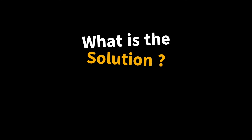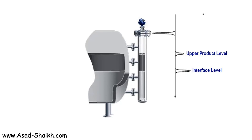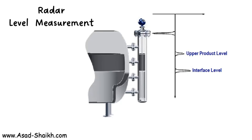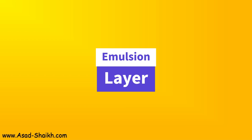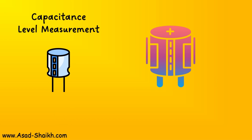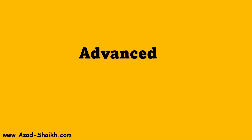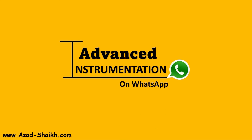The solutions for these cases include radar level measurement, which is very useful for interface level measurement. It is comparatively costlier, but for interface level it is always recommended to go for guided wave radar rather than free space radar, because of its accuracy — especially if you have an emulsion layer. Another option is capacitance level measurement, if your process is able to accommodate that technique.